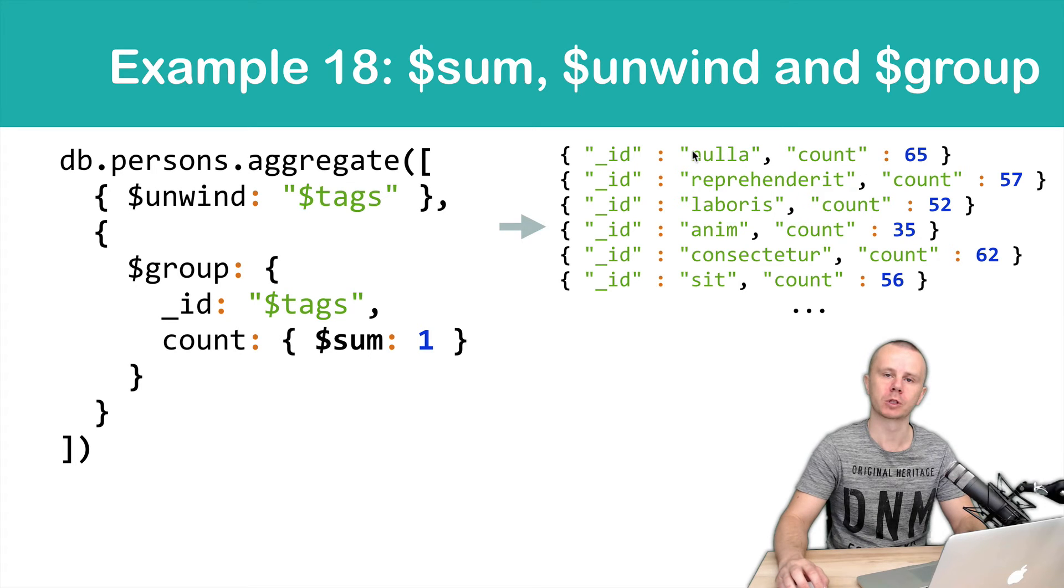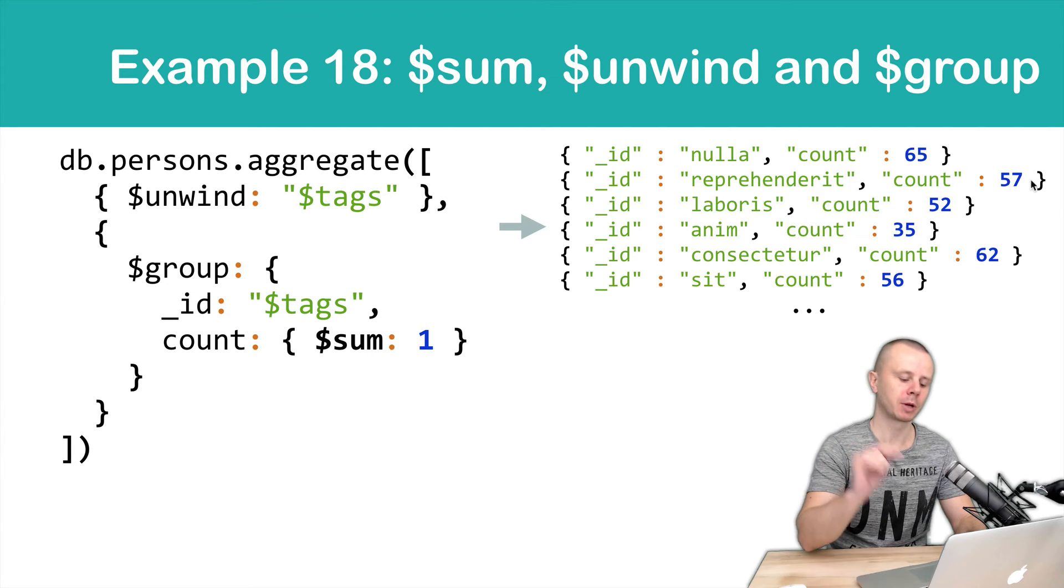It means that the first tag null appears 65 times, the second tag appears 57 times, and so on. Let's look at this in action.